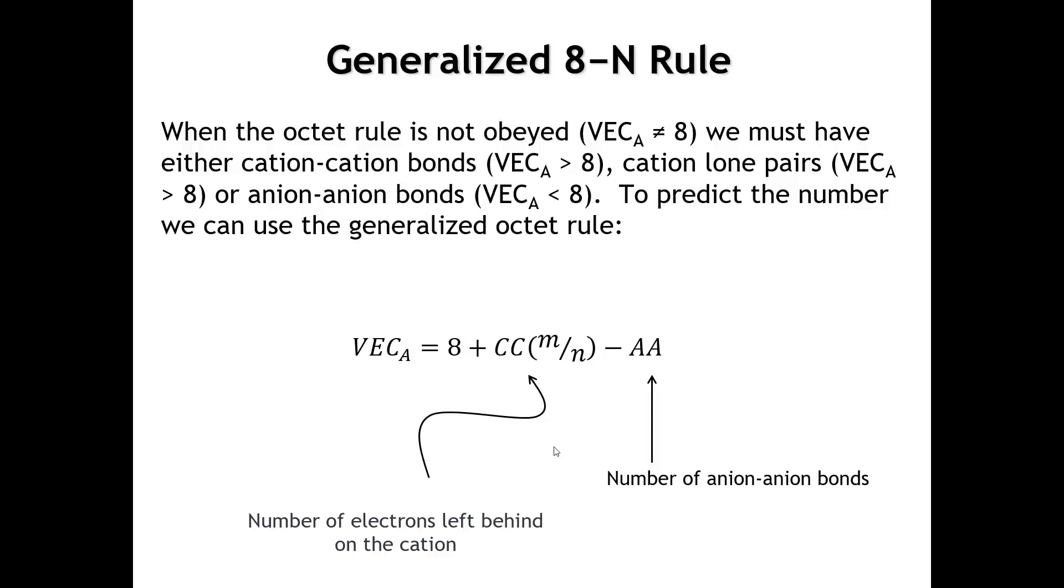Just like phosphorus or sulfur or silicon all have to make bonds to other atoms of the same type in those elemental structures. Here, we need anion-anion bonds, thallium-thallium bonds. Sometimes we'll see that the valence electron count per anion is actually larger than eight. And in that case, that means the anion cannot accept all of the electrons from the cation. And so, some electrons have to be left behind on the cation. And that number we call CC.